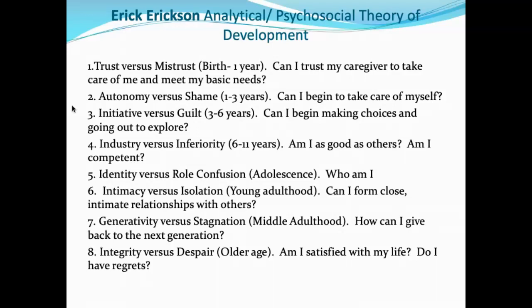The second stage is autonomy versus shame and doubt — can the child begin to take care of themselves? If you do everything for them and don't let them explore, they develop shame and doubt about their abilities. The third stage is initiative versus guilt — can they start making their own choices and explore independently? The fourth stage is industry versus inferiority, which involves social comparison: who does better academically, who is more athletic. Am I as good as others? Am I competent? Each person internalizes the outcome of each stage differently, producing unique combinations that manifest in adult behavior.